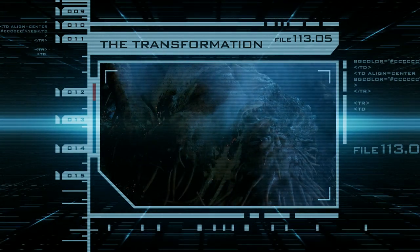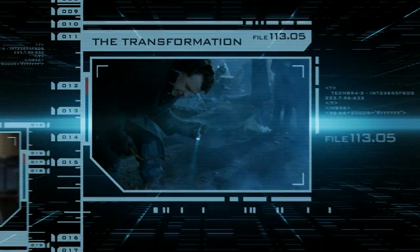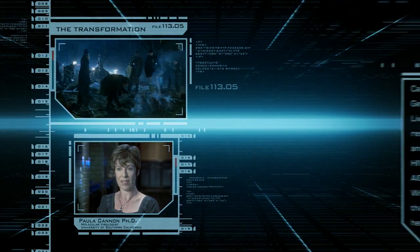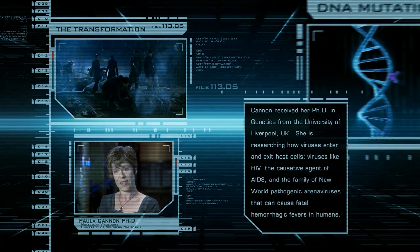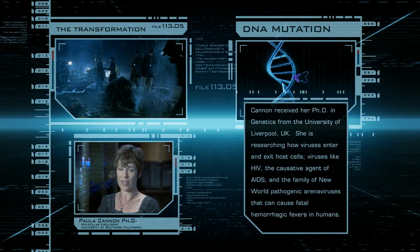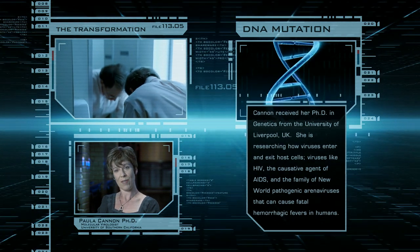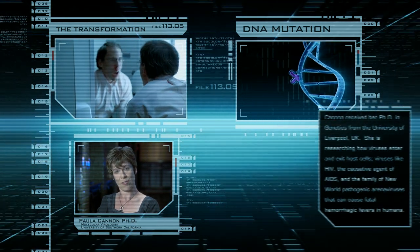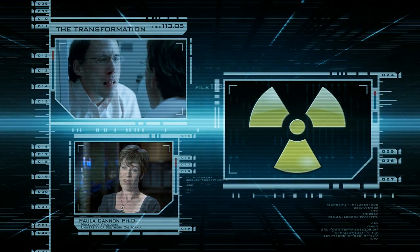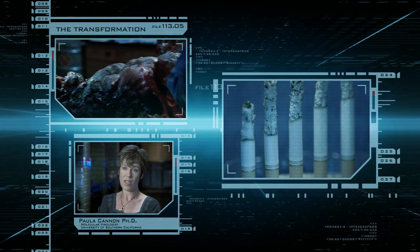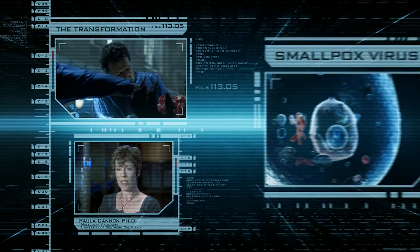Our friend here didn't start out this way. In order for a cell to be changed so profoundly, the DNA is going to have to be mutated — the genetic code of that cell is going to have to be reprogrammed. There are certainly things out there that can have those sorts of effects on your cells: environmental factors such as radiation, cigarette smoke, and even the genetic parasites that we call viruses.